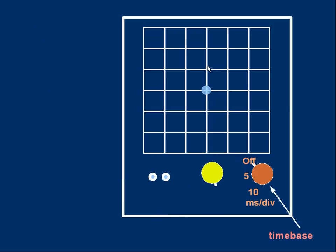Now let's look at the other control shown in red. This is called a time-based control. At the moment, it's set to the off position. I've marked a couple of values on there, 5 and 10. They're in units of milliseconds per division. In my example, oscilloscope. Let's turn the time-based on. Turn it to 5.